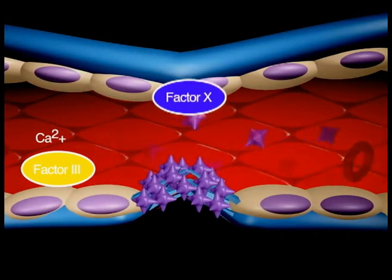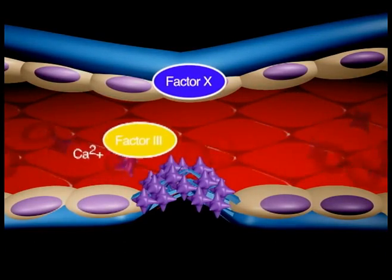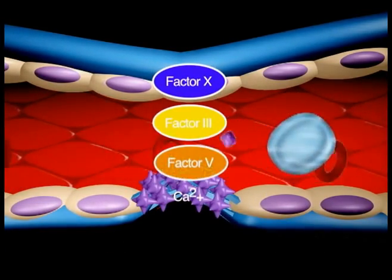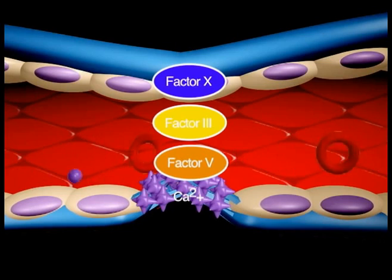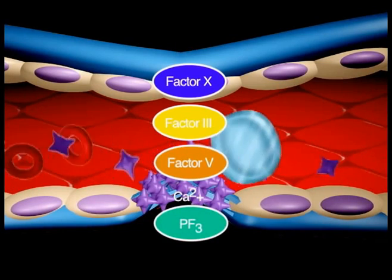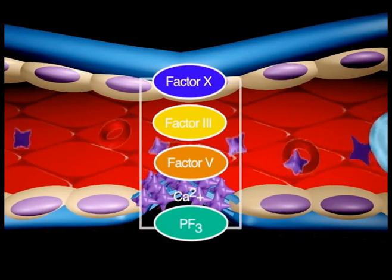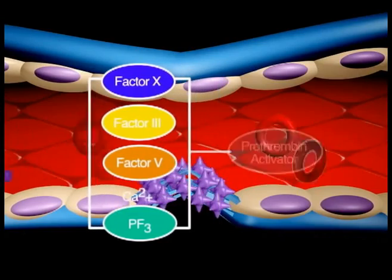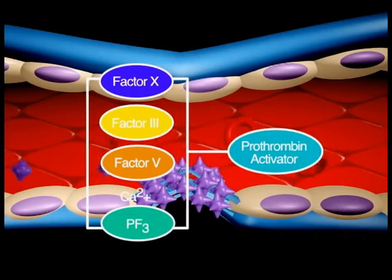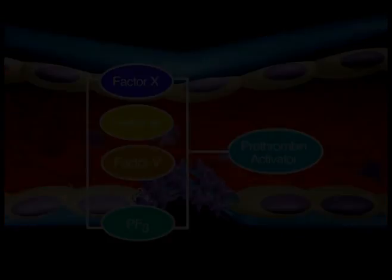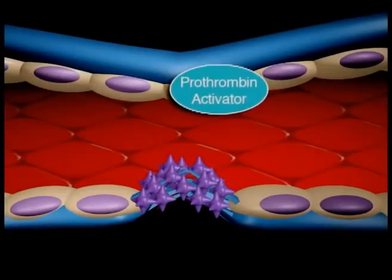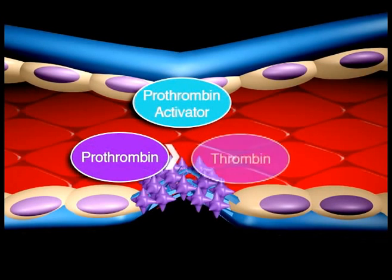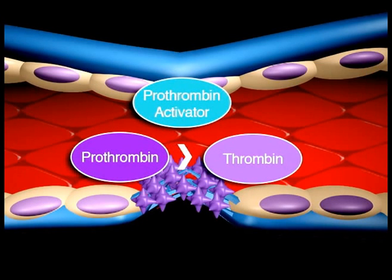Active factor X, along with factor III, factor V, calcium, and platelet thromboplastic factor, or PF3, will activate prothrombin activator.